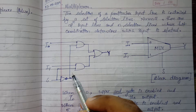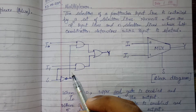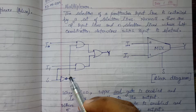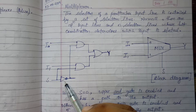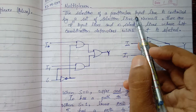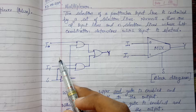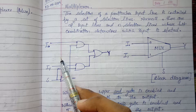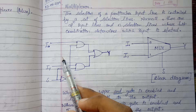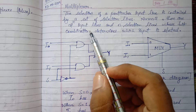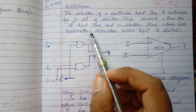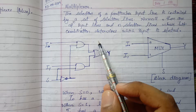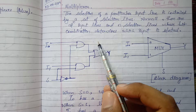A multiplexer selects a particular input line using a set of selection lines. Normally there are 2^n input lines and n selection lines whose bit combination determines which input is selected. So basically, if we are giving 2^n input lines, the output should be one particular input, and to select that particular input line we give n selection lines.